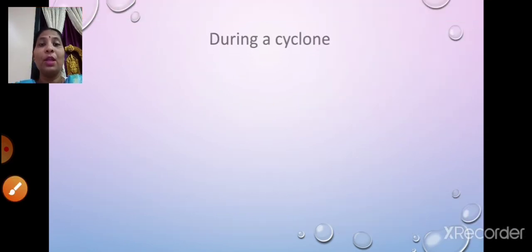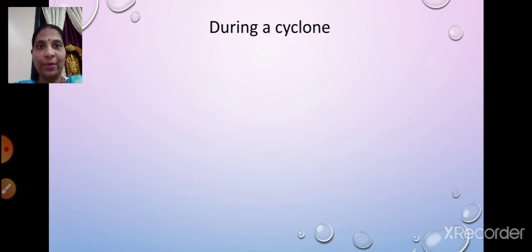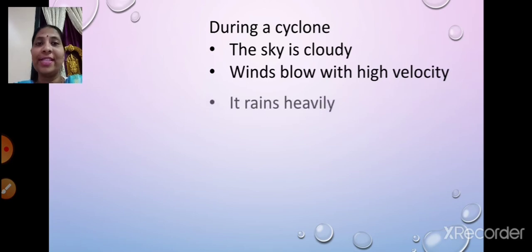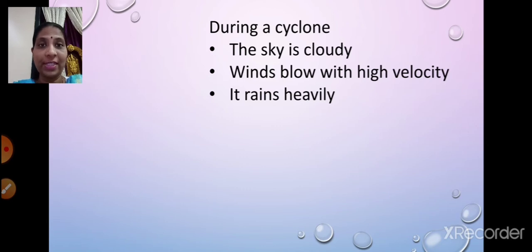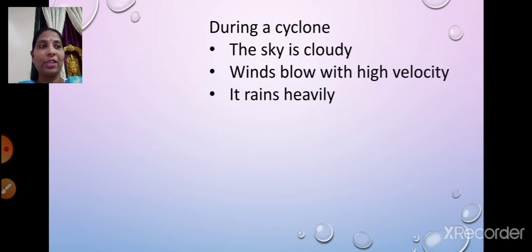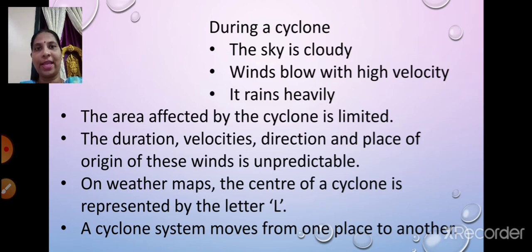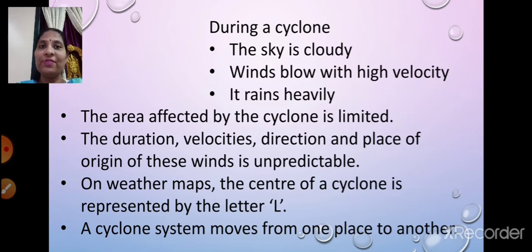Now, what are the conditions during a cyclone? During a cyclone, the skies are cloudy, winds blow with high velocity, and it rains heavily. These are the conditions which prevail during a cyclone. Also, the area affected by a cyclone is limited, and the duration, velocity, direction and place of origin of these winds is unpredictable — you cannot predict it.